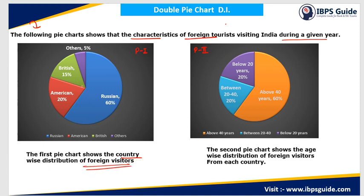The foreign tourists are belonging to different countries. This is pie chart number one. If I consider the total foreign tourists as 100%, then 60% of that will be coming from Russia, 20% is coming from America, 15% is coming from Britain, and the rest 5% is coming from other countries. Pie chart two gives you the age-wise distribution from each country, including people below 20 years, 20 to 40 years, and above 40 years of age.